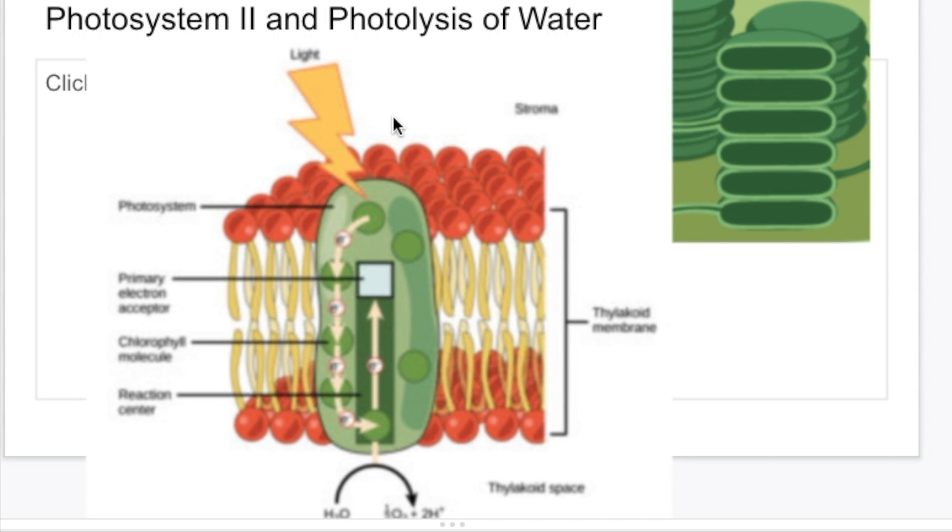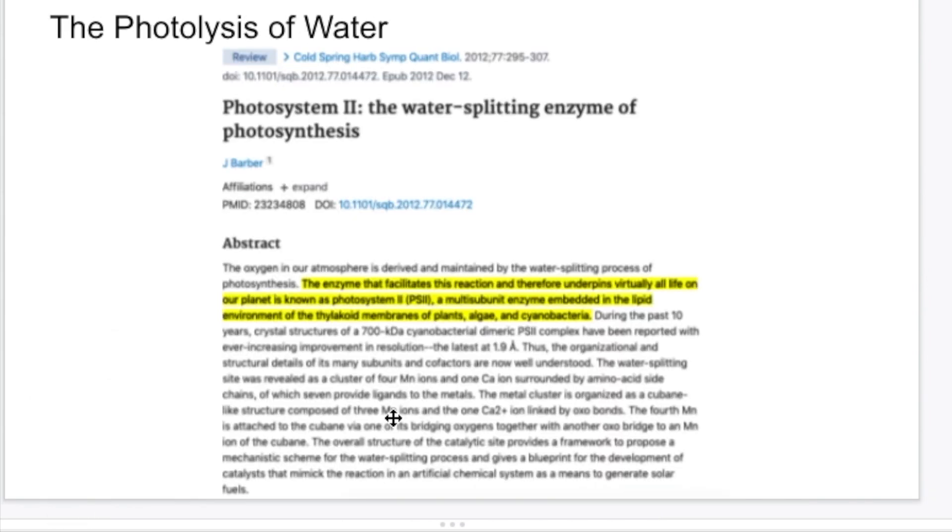Photosystem II can also be described as an enzyme because it's very much catalyzing or assisting in the splitting of water. The photolysis of water is not simply about exposing water to sunlight and expecting it to split into hydrogen and oxygen. That doesn't happen. Something needs to be present to catalyze and to make that process happen. And that catalyst is very much this group of molecules here, this group of chlorophyll molecules that make up photosystem II. So therefore it's not surprising that in this research paper photosystem II is referred to as the water-splitting enzyme of photosynthesis.